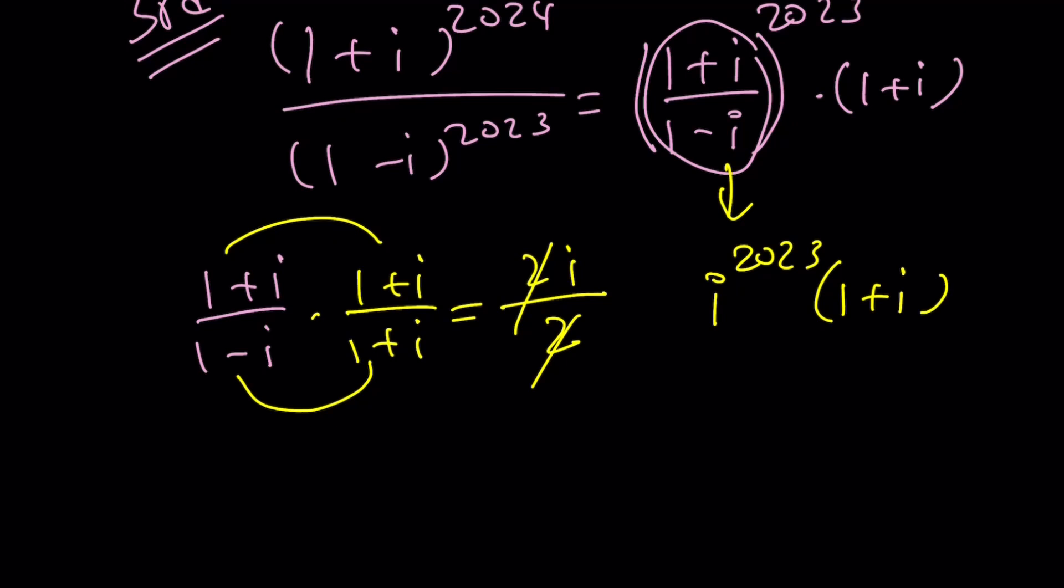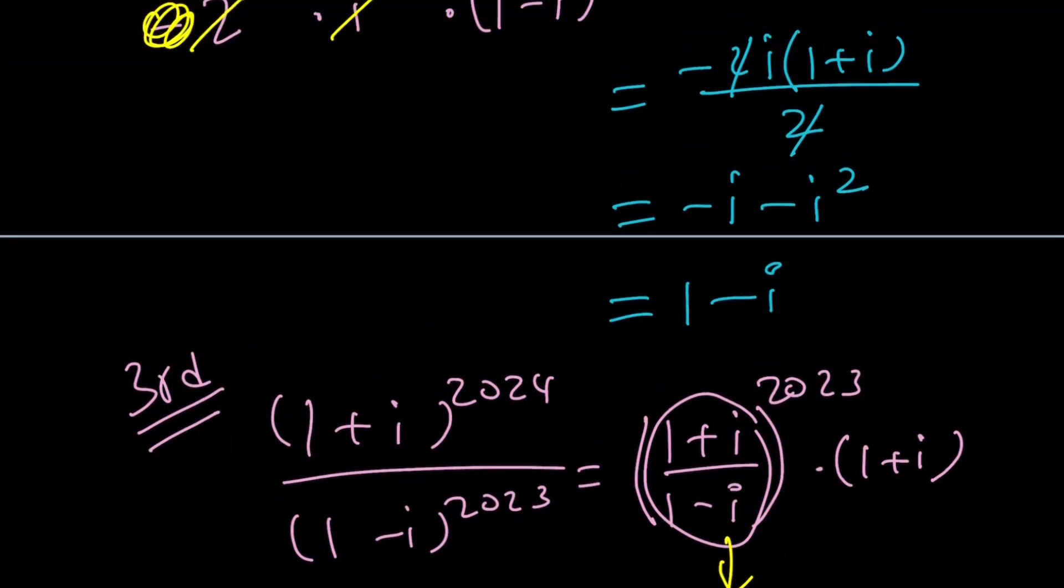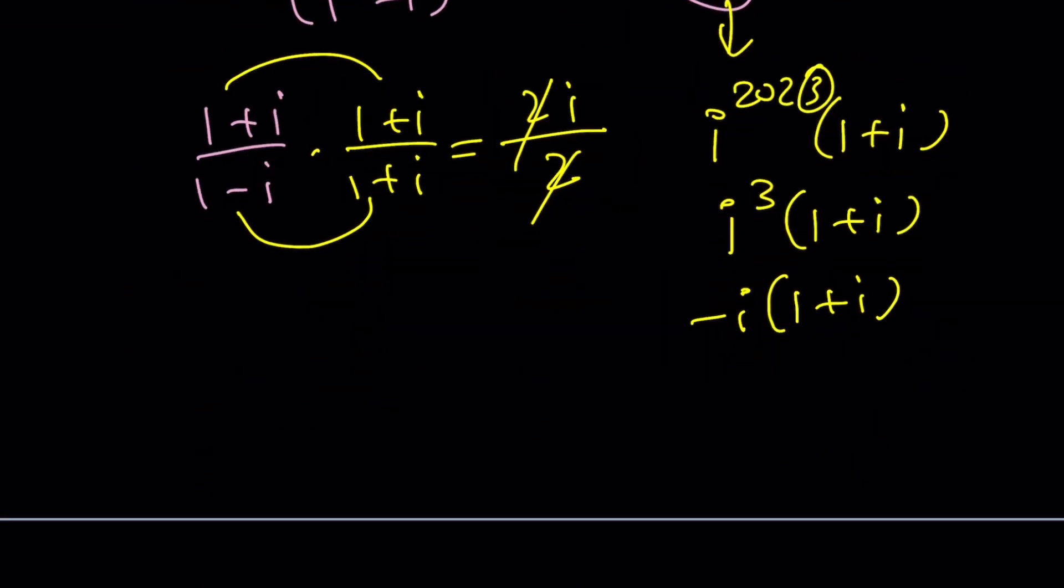And i to the power of 2,023, by the way, is you're going to look at the remainders upon division by 4. So the only thing that matters is basically pretty much the last digit mod 4. And that will be a 3. So this is equivalent to i to the third, which is equivalent to negative i. And that should give us the exact same thing, which is 1 minus i. Make sense?